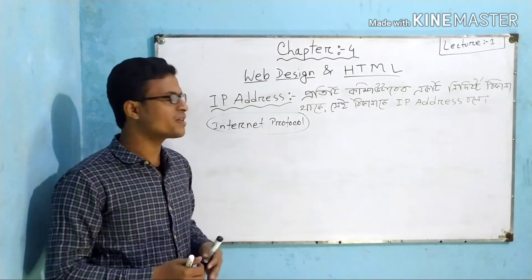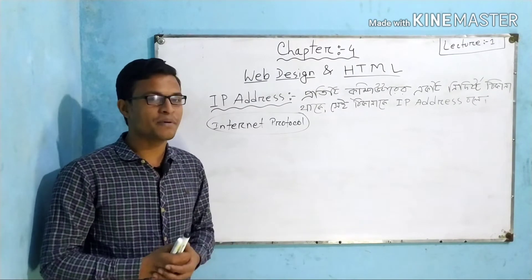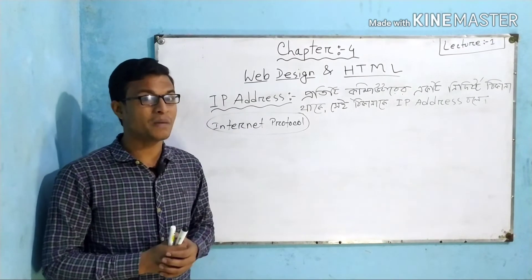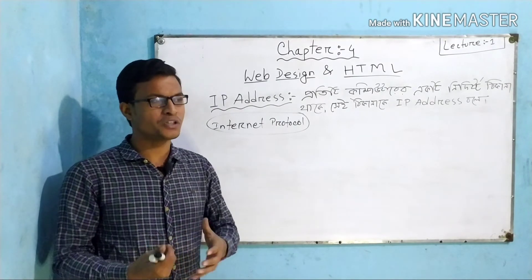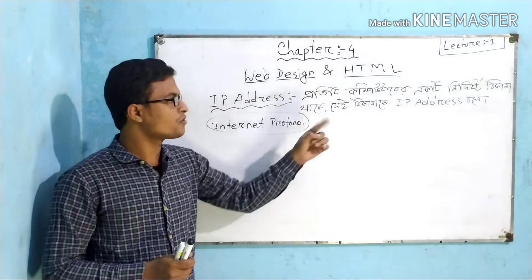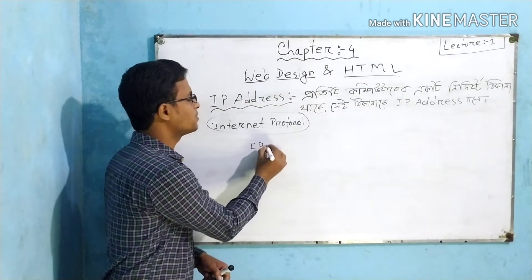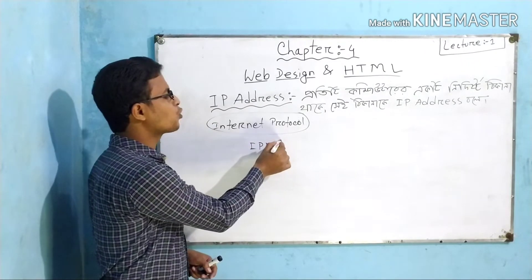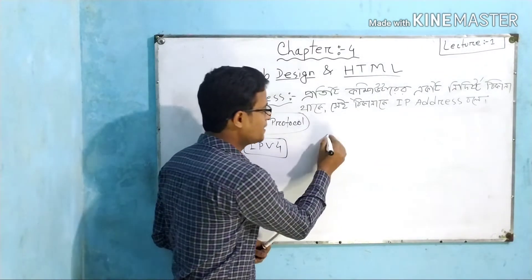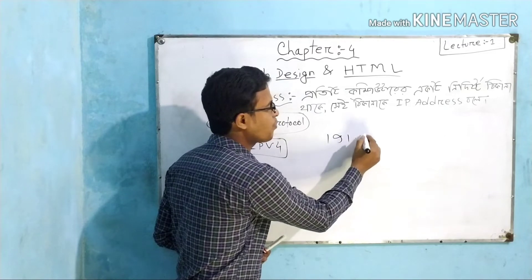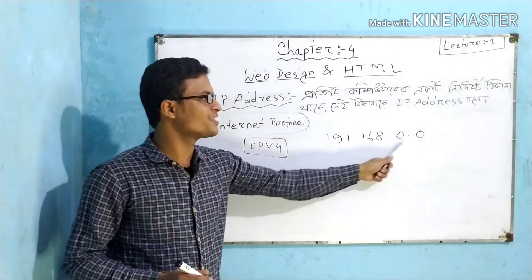I will show you this protocol. Every computer has a lot of information. I will tell you that every computer has an IP address. We are going to use the IP address as IPv4 — Internet Protocol version 4. The IP address example is 192.168.0.0.